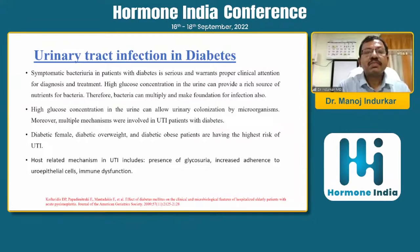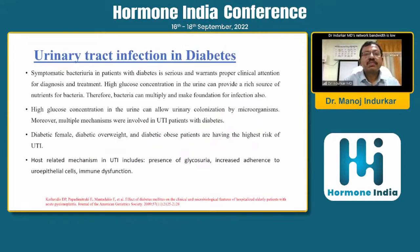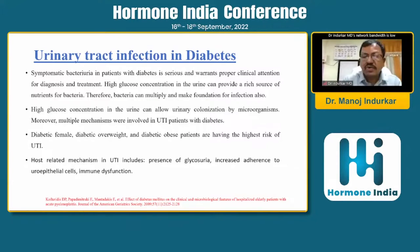In terms of urinary tract infections and diabetes, many patients only have asymptomatic bacteriuria. Symptomatic bacteriuria needs proper attention. Most UTI cases are seen when there is a high glucose concentration, which is responsible for colonization of the organism. High glucose concentration provides a favorable environment for many organisms. The most common organism is E. coli, which is totally dependent on glucose.